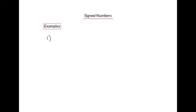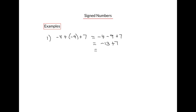Let's wrap up by applying what we've learned. Take a look at this expression. You might notice that there are two signs between the 4 and the 9, and we only ever want one sign per number. What you do is apply the rules of multiplication: a positive and a negative become negative. So this can be rewritten as negative 4 minus 9 plus 7. Working left to right: negative 4 minus 9 — if the temperature was minus 4 and went down 9 degrees, it would be negative 13. Then if the temperature went back up 7 degrees, the answer would be negative 6.